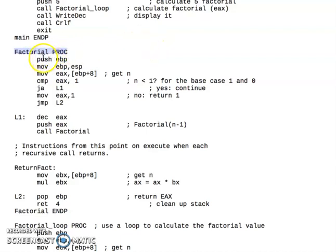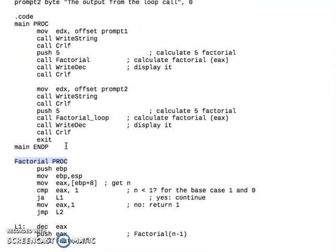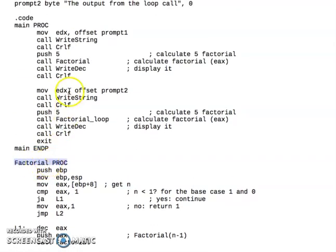That's why, for example, in the recursive factorial function we do the push pop EBP manually. Before you need to call this factorial procedure, you need to push the number of the factorial you want to find. Then you call the factorial procedure, so they can calculate and return your result.